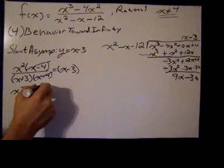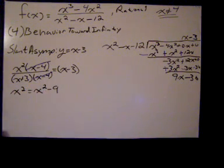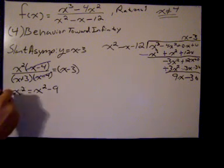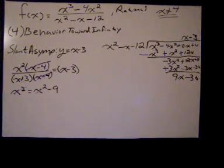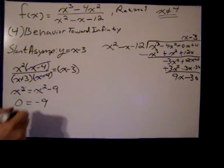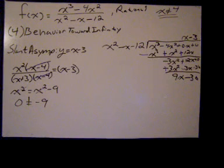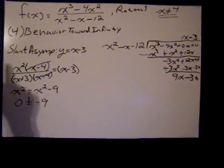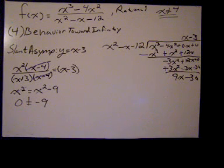Well, that's a difference of perfect squares. So we have x squared equals x squared minus 9. If we subtract x squared from both sides, of course, we get an untrue statement, which says that 0 equals negative 9. And last I checked, 0 didn't equal negative 9. So we got an untrue statement. So therefore, the function never crosses the slant asymptote, y equals x minus 3.